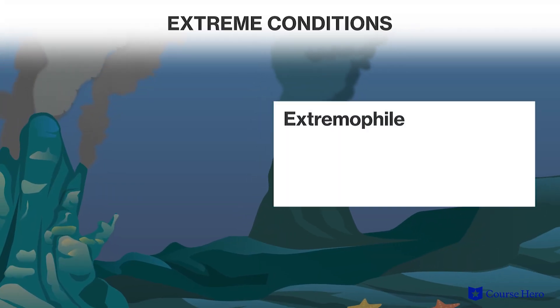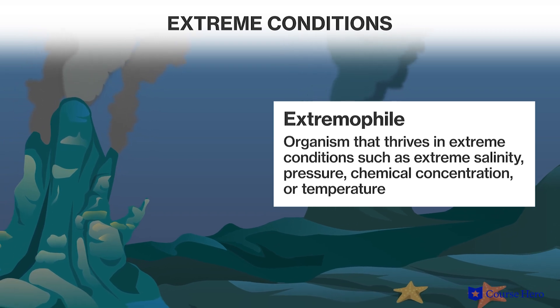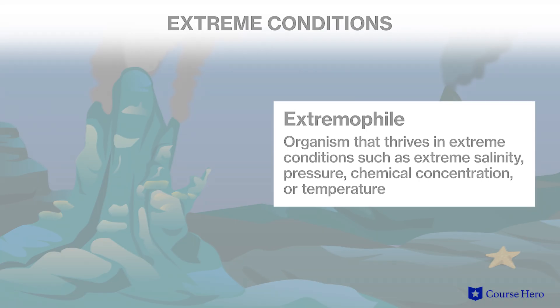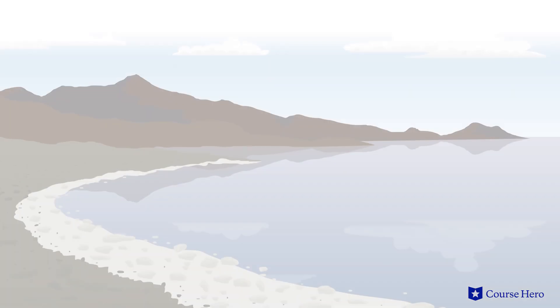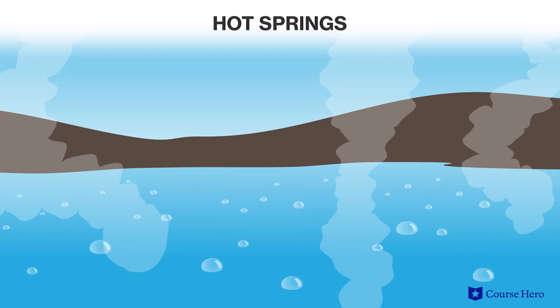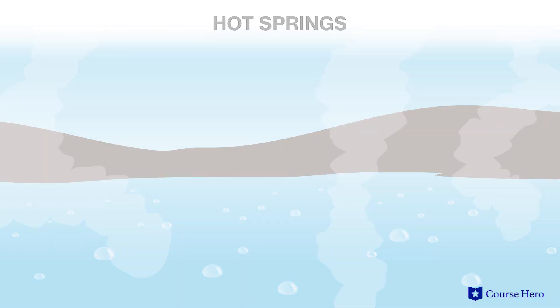The members of archaea gained a reputation for being extremophiles — organisms that thrive in extreme conditions, such as extreme salinity, chemical concentration, or temperature. This is partially because the first identified archaea were found under conditions that would not support most other life. For example, some archaea live in the very salty Great Salt Lake in Utah, and others live in hot springs that can reach temperatures above 100 degrees centigrade. However, it's important to note that not all archaea live in such extreme conditions — some are found in swamps and oceans, and some even reside in your gut.